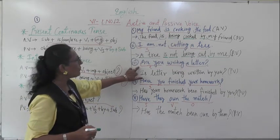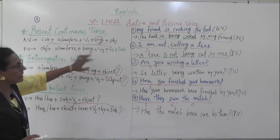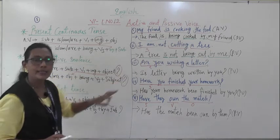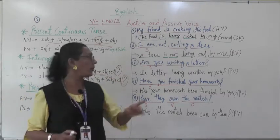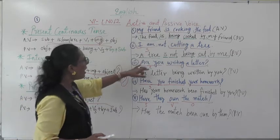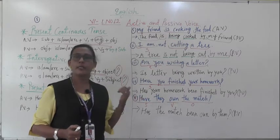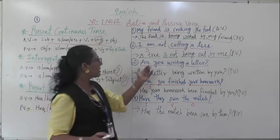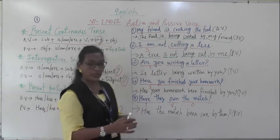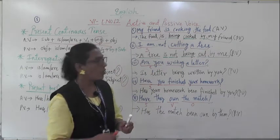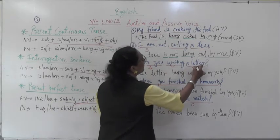Third example: 'Are you writing a letter?' This is an interrogative sentence — question mark is there. Again, find subject, verb, and object. Subject is 'you,' verb is 'writing' (ING, continuous tense), and object is 'a letter.' In passive interrogative, helping verb comes first. This sentence is present tense, so 'is' comes first.